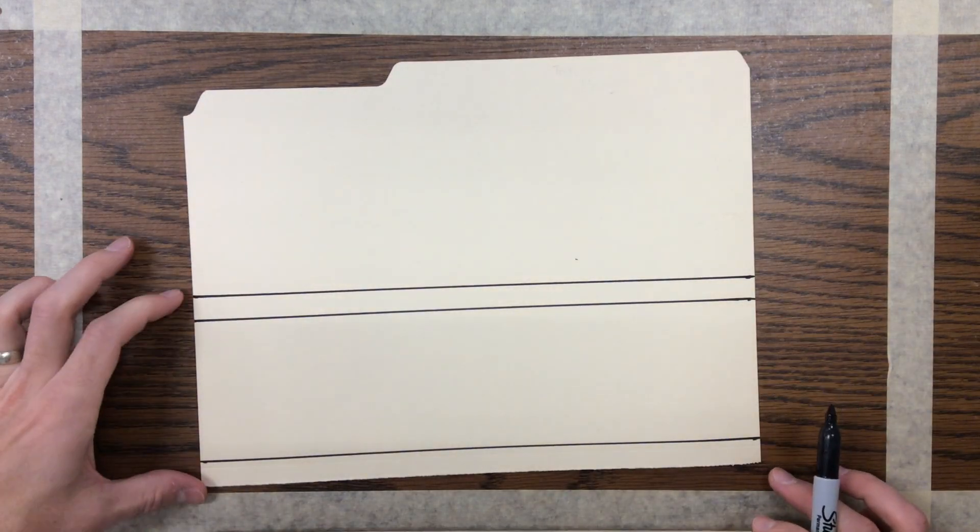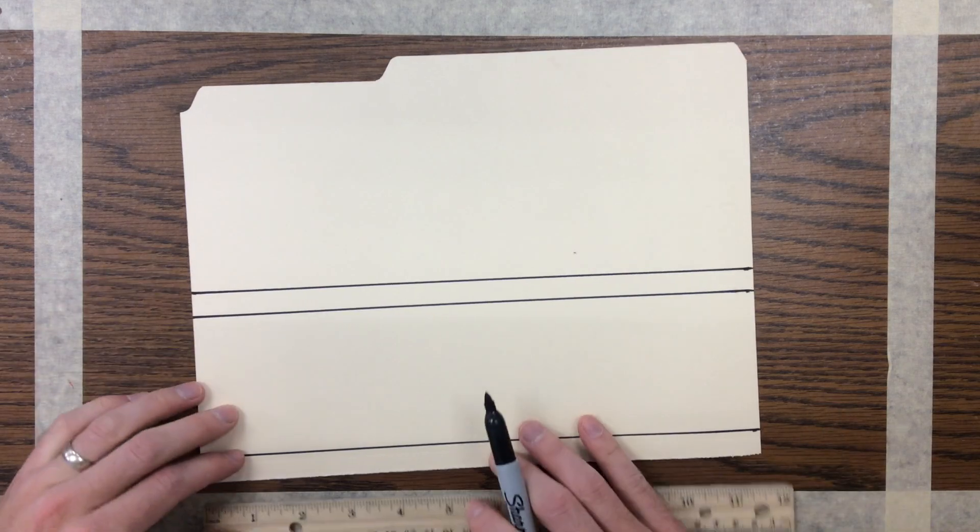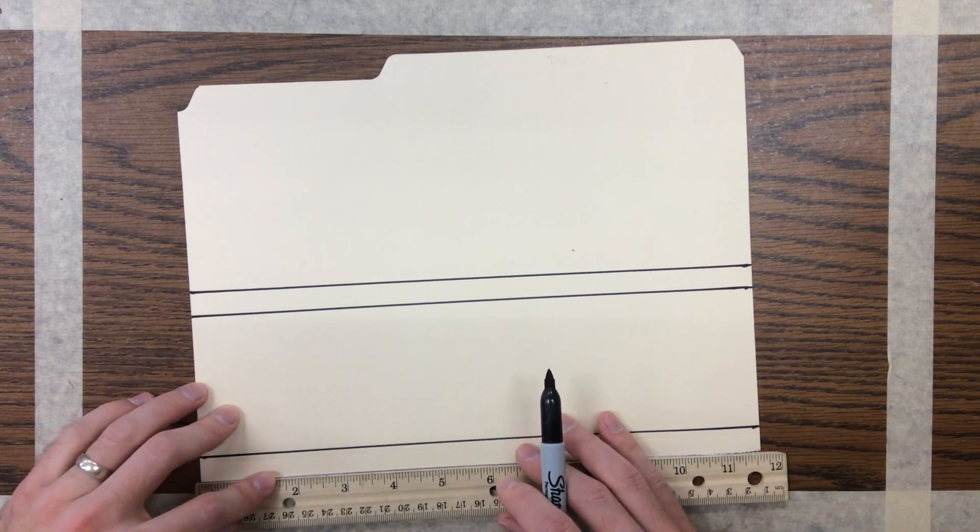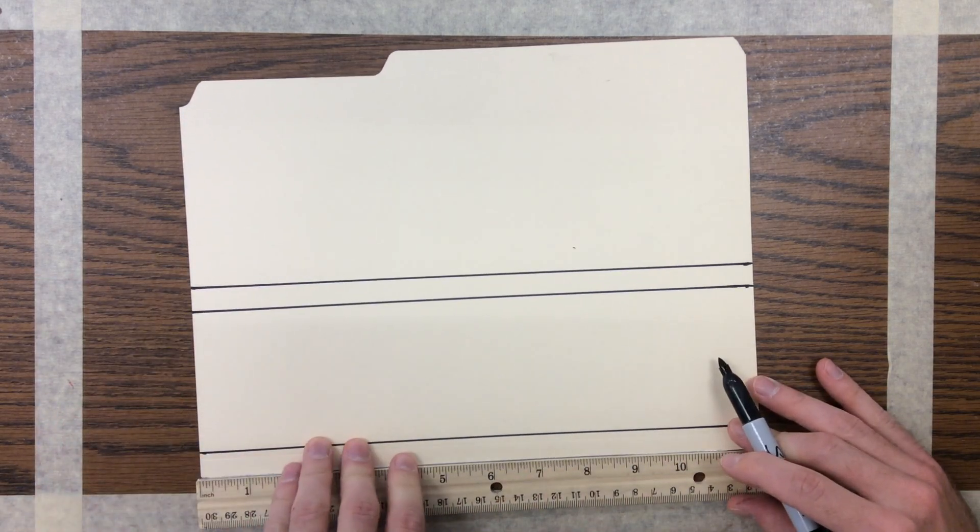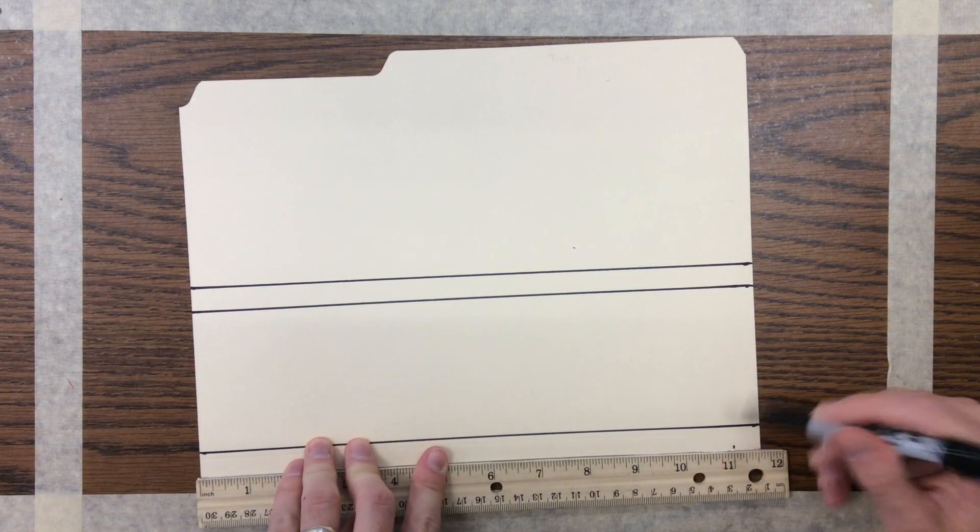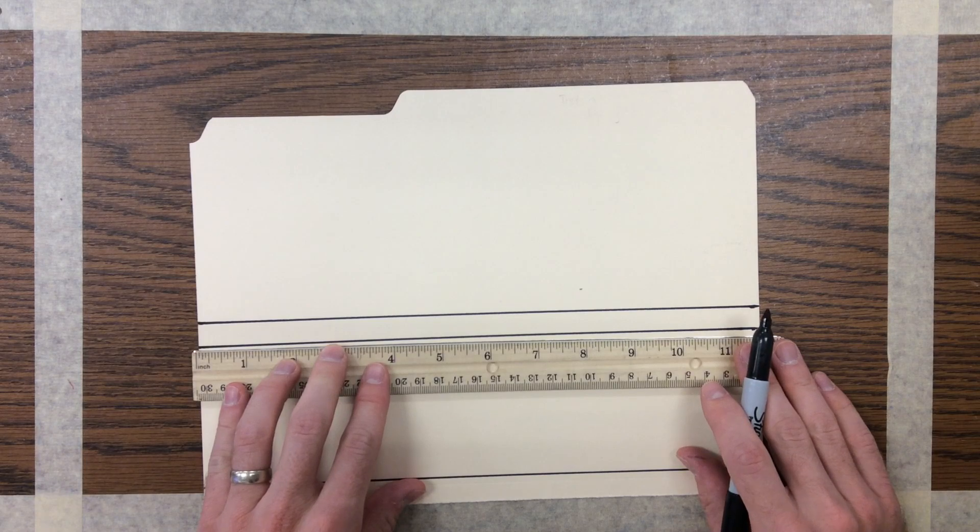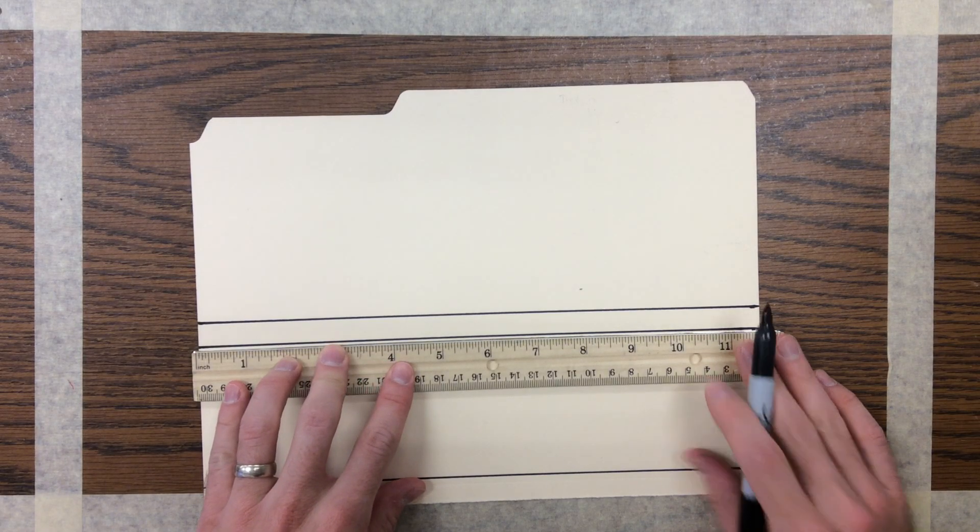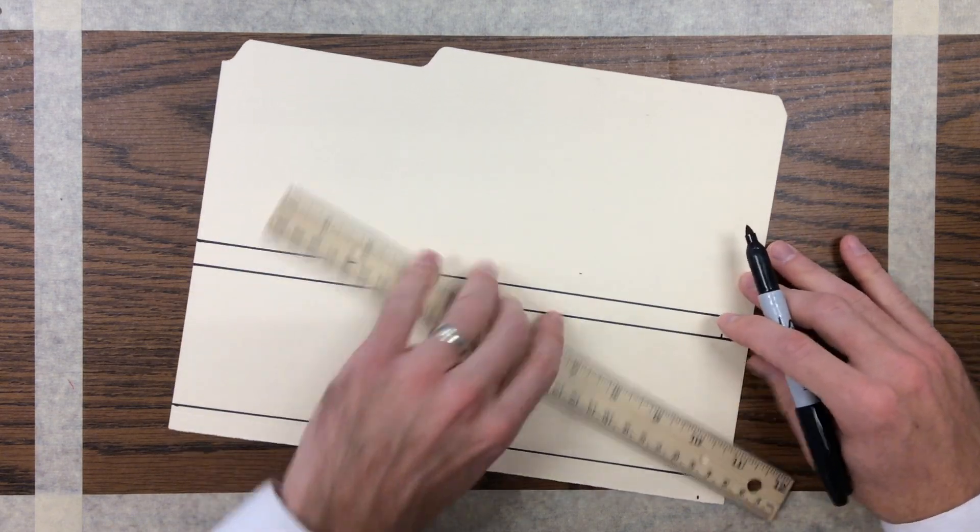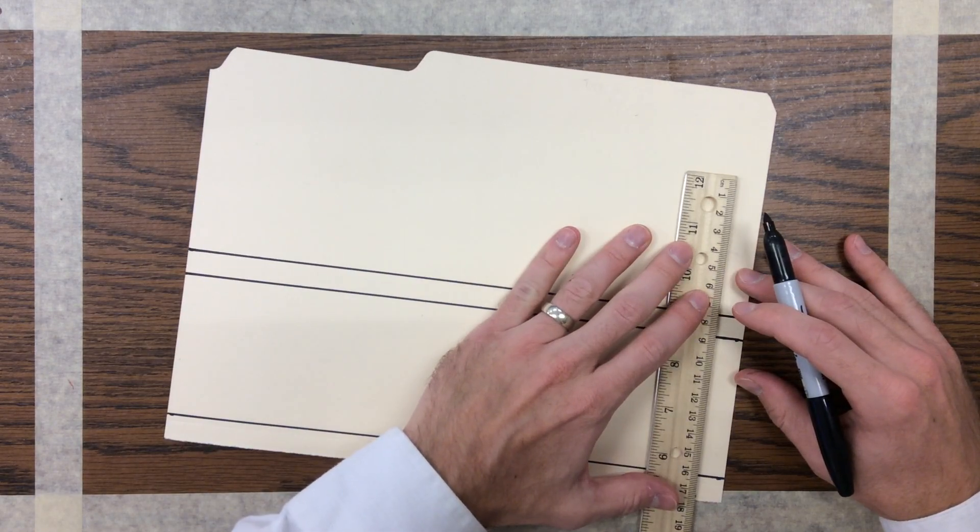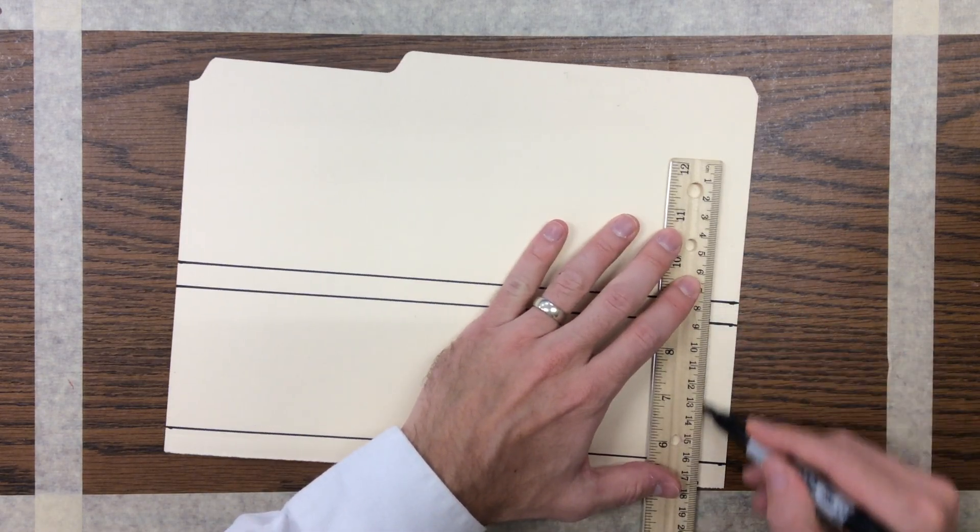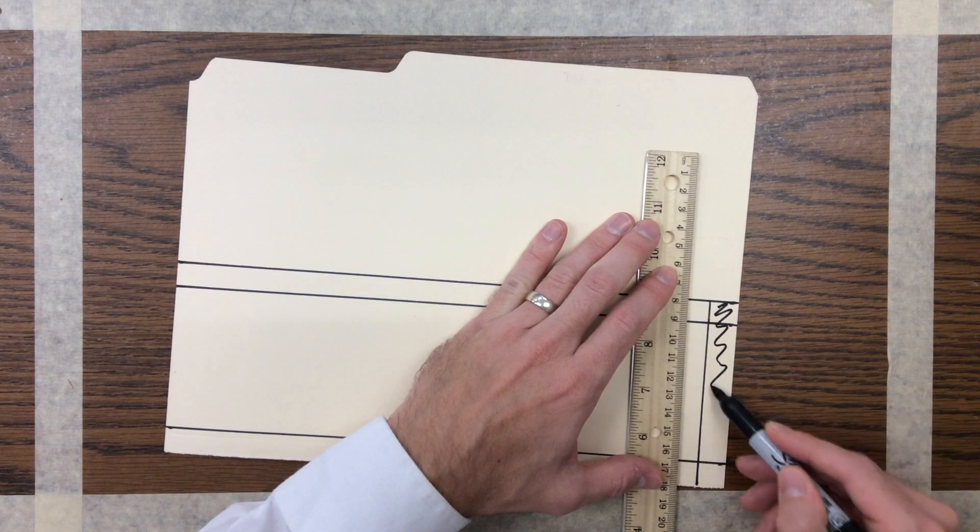Now our skimmer is four inches total in width but only 11 inches long. So I'm going to measure off 11 inches on both sides, and then this is a portion we do not need.